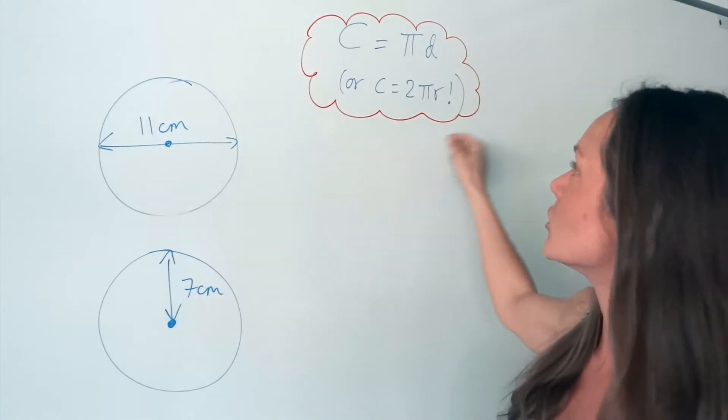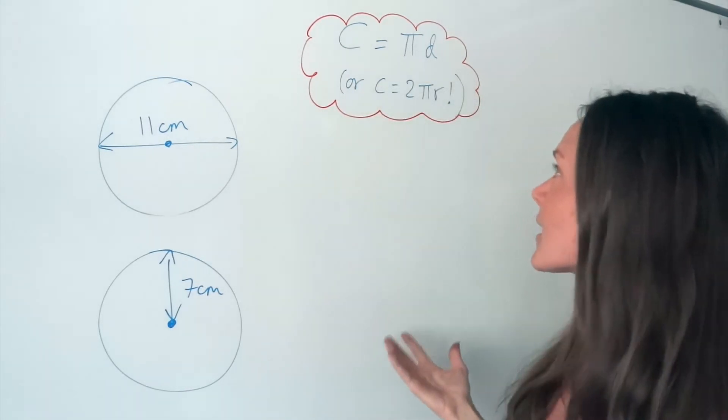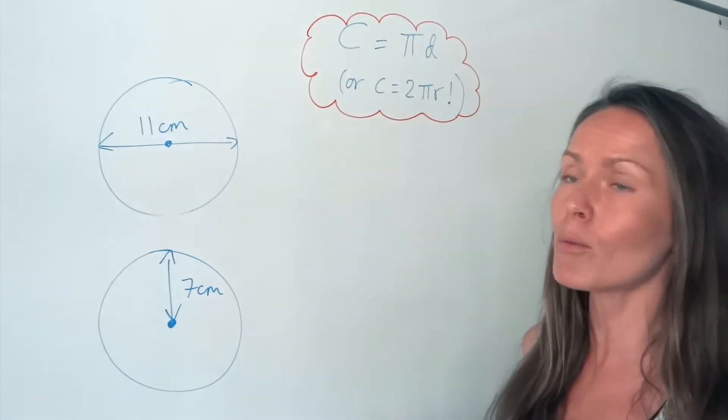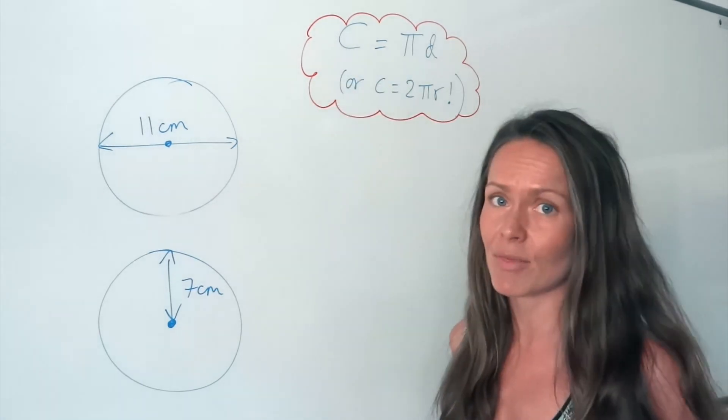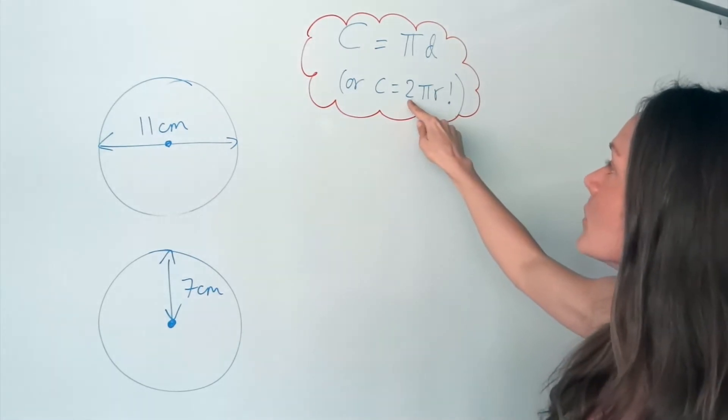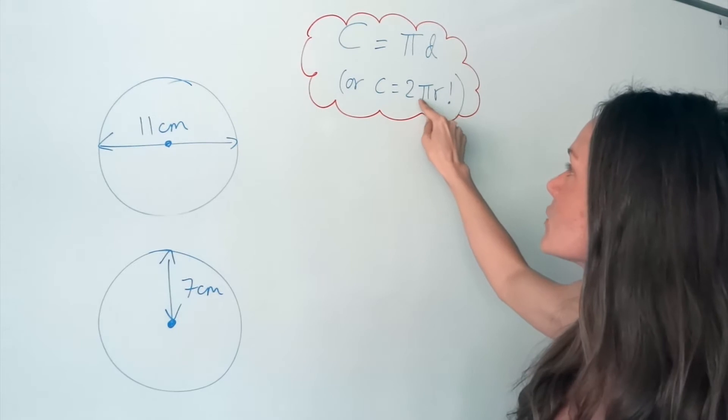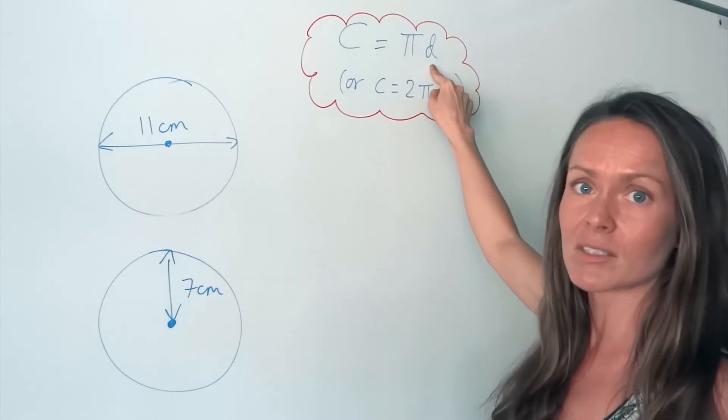Underneath is just another version of the same formula. They're exactly the same. Some people like to remember this one, or they remember both, but they're exactly the same thing. You can see here, because 2r, r is the radius, if you multiply the radius by 2, it gives you the diameter.